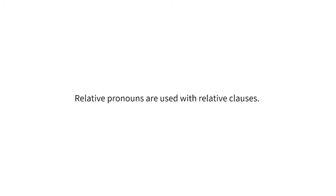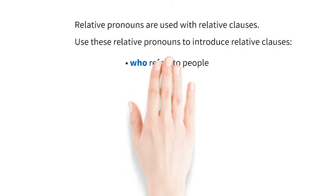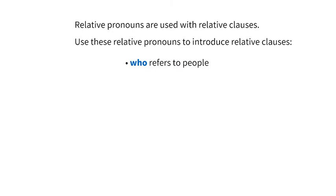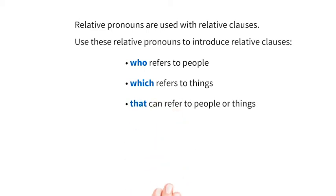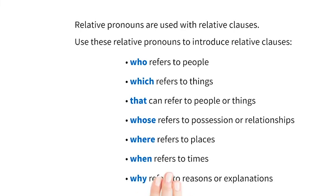Relative pronouns are used with relative clauses. Use these relative pronouns to introduce relative clauses: who refers to people; which refers to things; that can refer to people or things; whose refers to possession or relationships; where refers to places; when refers to times; why refers to reasons or explanations.